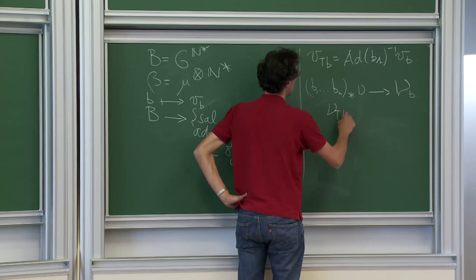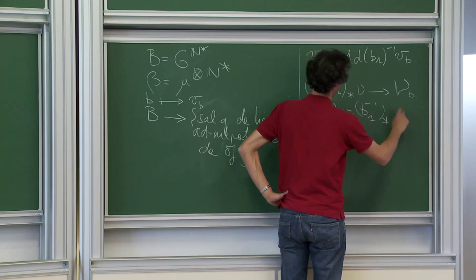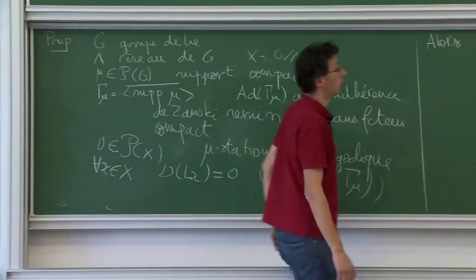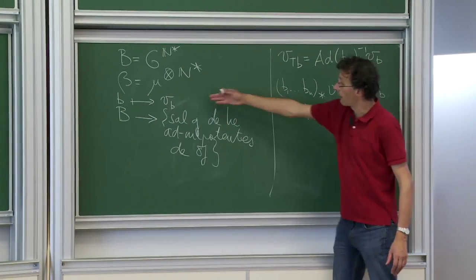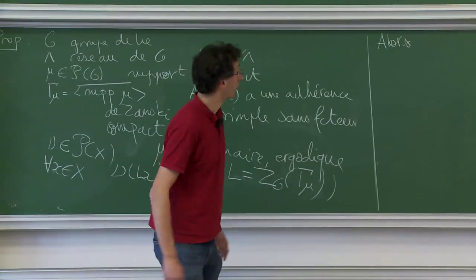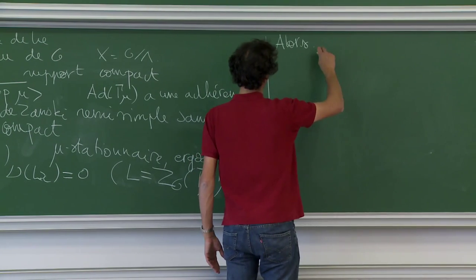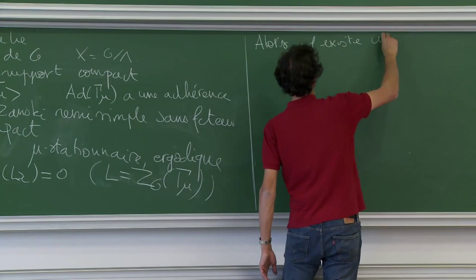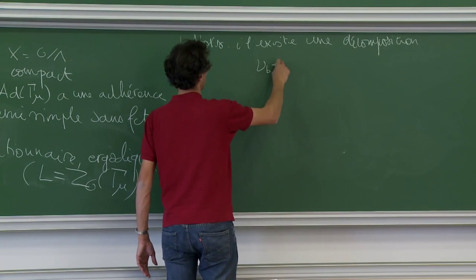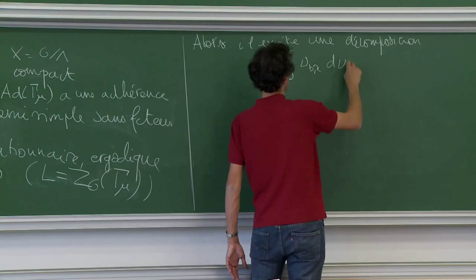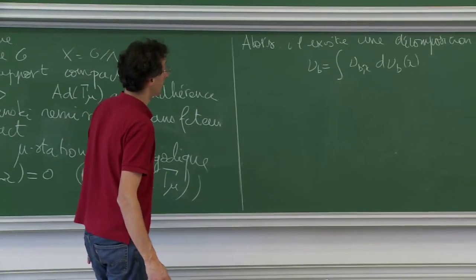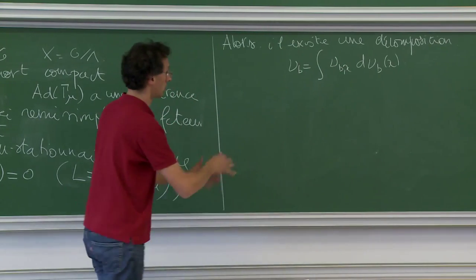Dans l'idéal, j'aimerais conclure que si jamais je ne donne pas de masse au centralisateur, eh bien nu_B va être invariante par l'exponentiel de cette sous-algèbre nilpotente, qui est un sous-groupe unipotent de G. Ensuite, on a vu qu'on pouvait appliquer le théorème de Ratner. Ce n'est pas tout à fait vrai parce qu'il faut éventuellement recouper en morceaux — il existe une décomposition. Nu_B s'écrit comme l'intégrale des nu_{B,x}. Ça peut être une partition finie ou infinie.